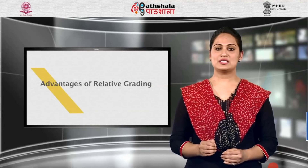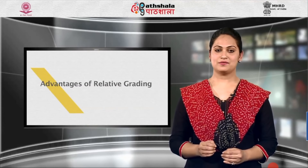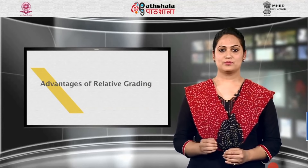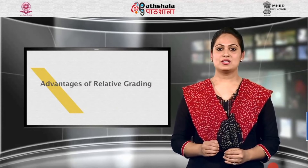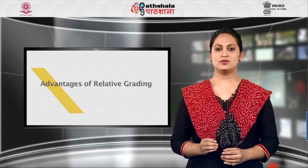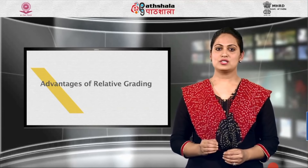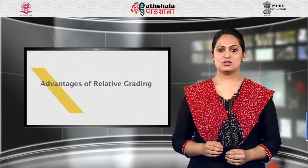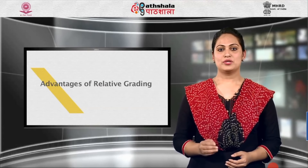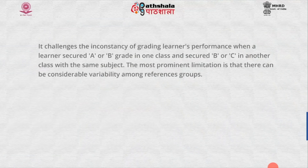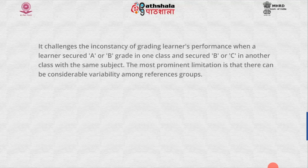The advantages of relative grading are that it is straightforward and clearly specifies what grades students will receive, and it prevents grade inflation when teachers are too lenient in their grading. The limitations of relative grading are that it does not give students, teachers, and parents exact information about what the learner has mastered in a particular subject. It also challenges the consistency of grading — a learner who secured A or B in one class may secure B or C in another class in the same subject. The most prominent limitation is that there can be considerable variability among reference groups, since some classes will be relatively high achievers and some relatively low achievers.